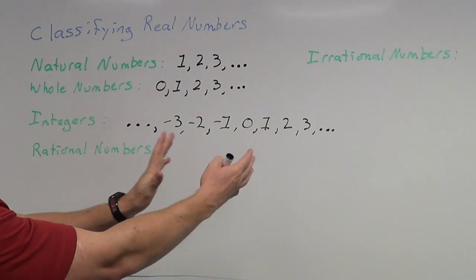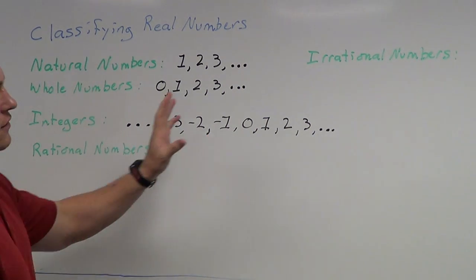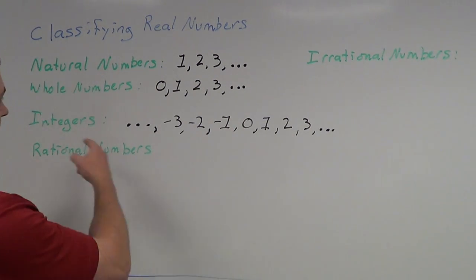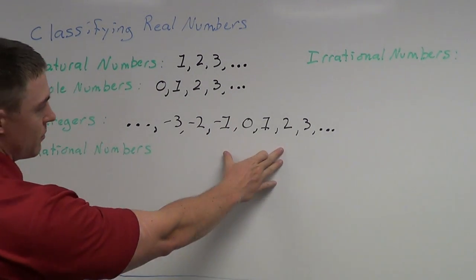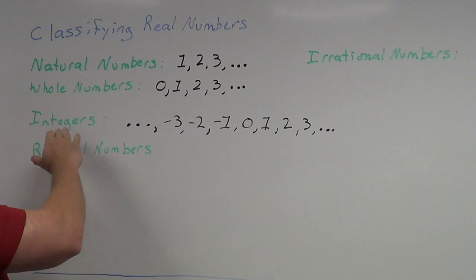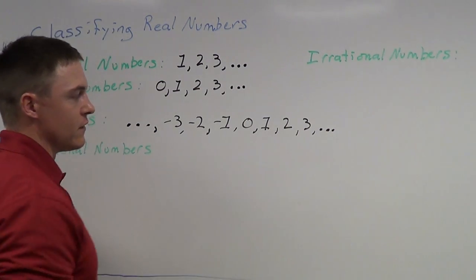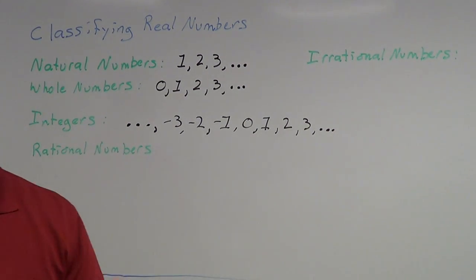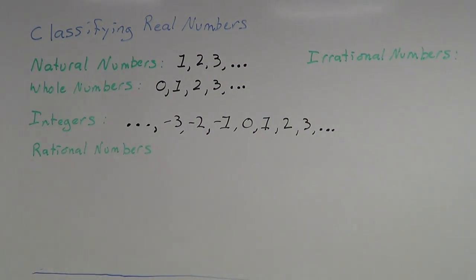That means so on and so forth to the left and so on and so forth to the right, which means the integers include all these numbers plus all the way to negative infinity and all the way to positive infinity. So these are all the numbers that you guys are used to working with. These are the integers that usually kids like to work with.